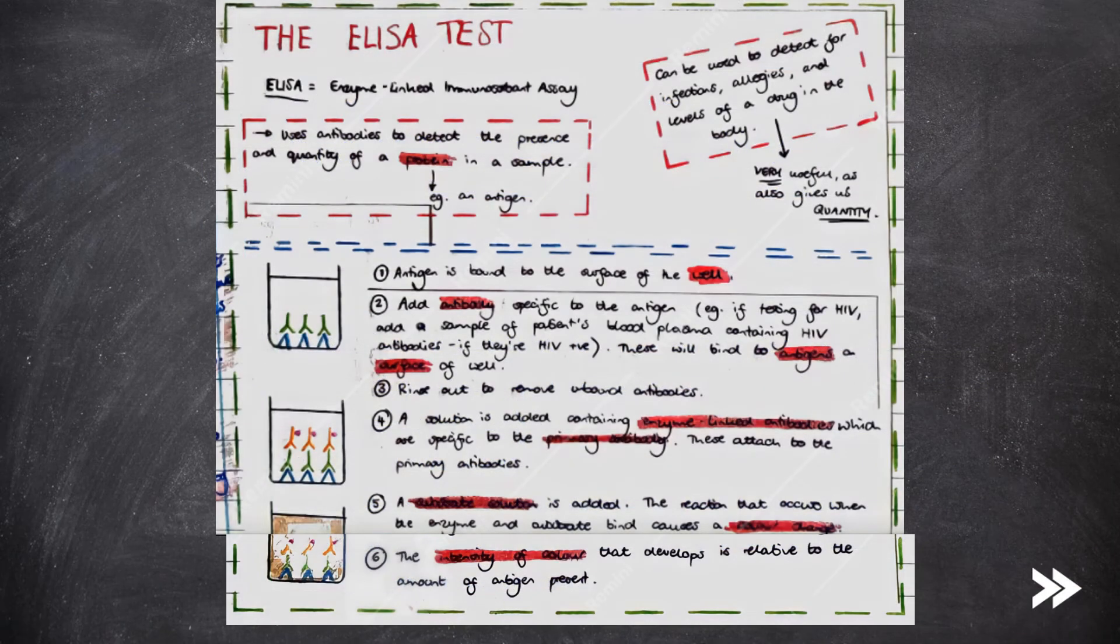And finally, we have the ELISA test, ELISA standing for Enzyme-Linked Immunosorbent Assay. It's a very useful test as it allows us to determine the presence and quantity of a protein in a sample. It can be used to detect for infections, allergies, and drug levels in the body, for example, when testing for doping in athletes.